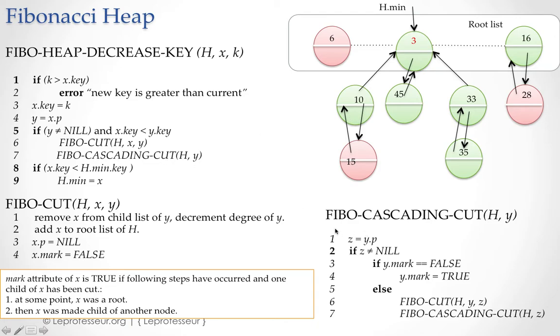The cascading cut algorithm is also simple enough. What you do is find the parent of the node on which you are executing the cascading cut operation, and then check if it is marked. If the node is marked, that means you will have to execute Fibonacci cut and cascading cut again till you don't find an unmarked node.